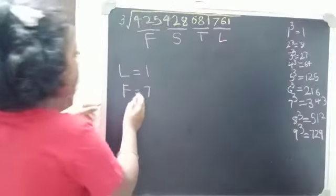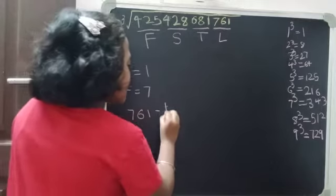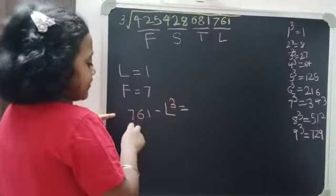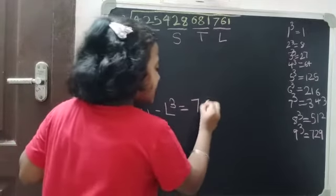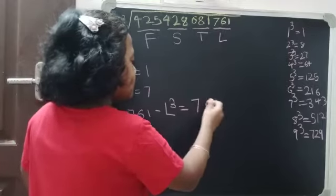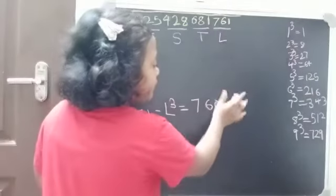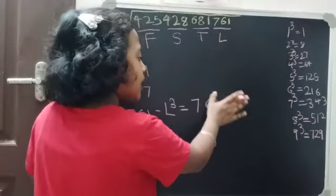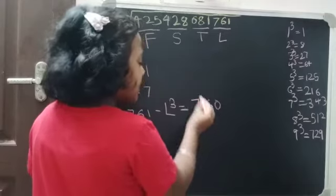Before solving T, we do a subtraction: L's pair 761 minus L cube. L is 1, and 1 cube is 1, so 761 minus 1 is 760. If we got a 0 at the last, we are moving in the right way. Forget about the 0, and the remaining number is 76. In 76, the last digit is 6.